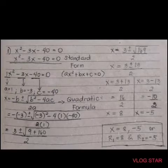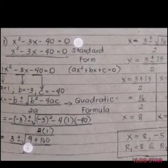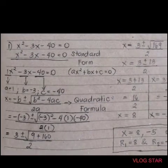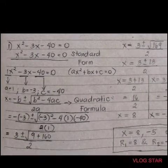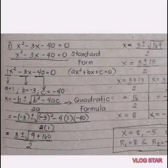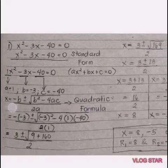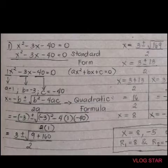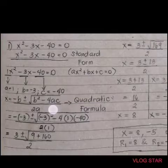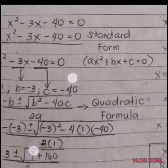The value of a here is 1. As you can see, the value of b is negative 3 and the value of c is negative 40. And then write the formula for the quadratic formula: x equals negative b plus or minus the square root of b squared minus 4ac, all over 2a.